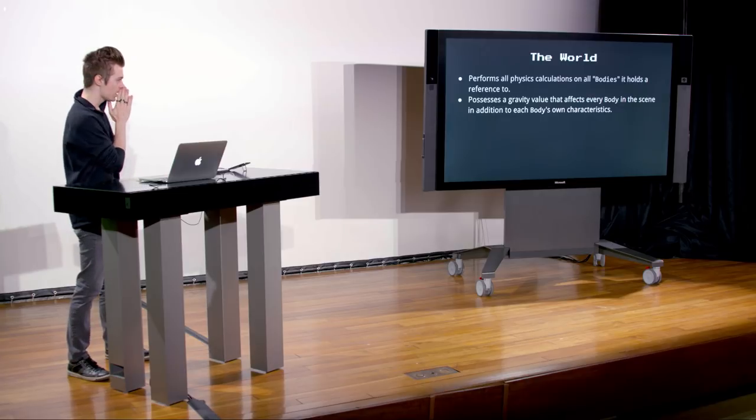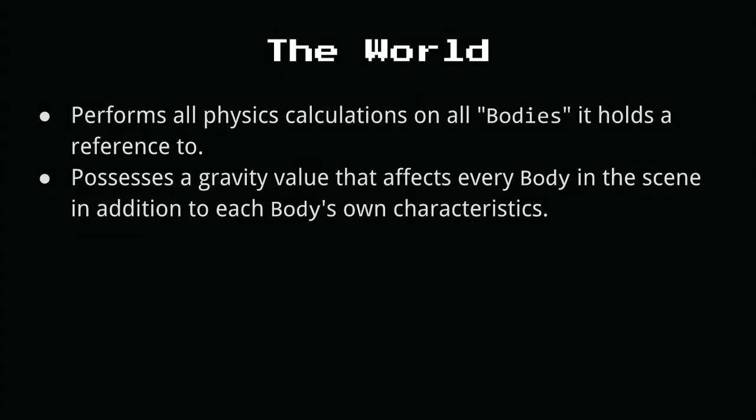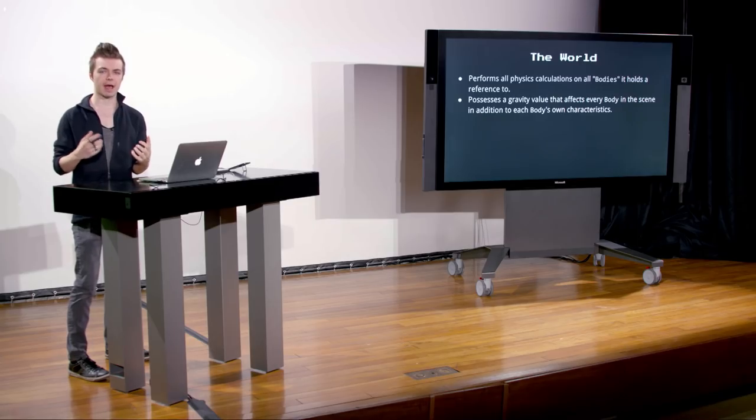The very first thing to understand when constructing a Box2D game or simulation is the world object. The world is like a machine that simulates all the pieces you've told it interact with each other. Box2D has objects called fixtures and bodies that perform physical interactions. The world updates all of those and applies the relevant forces and physics calculations that resolve collisions — we don't have to manually go through and update every single object's velocity or check for collisions.